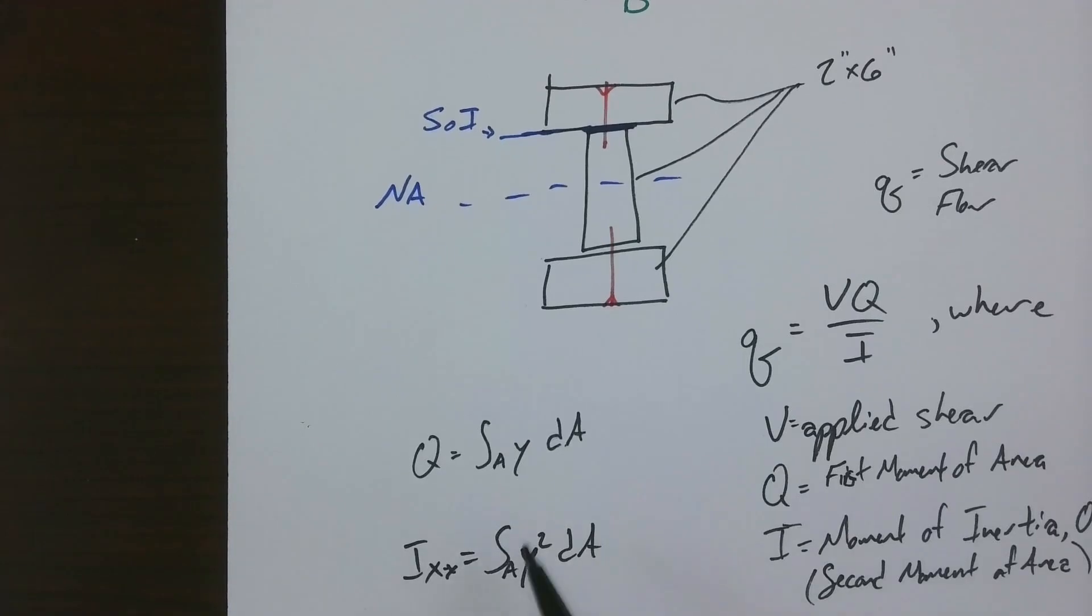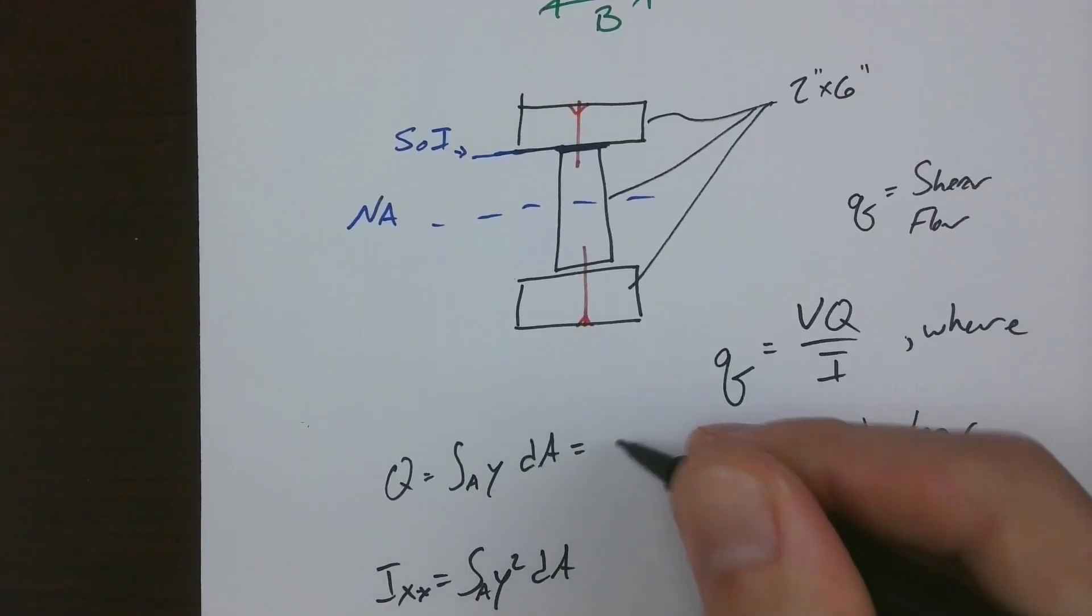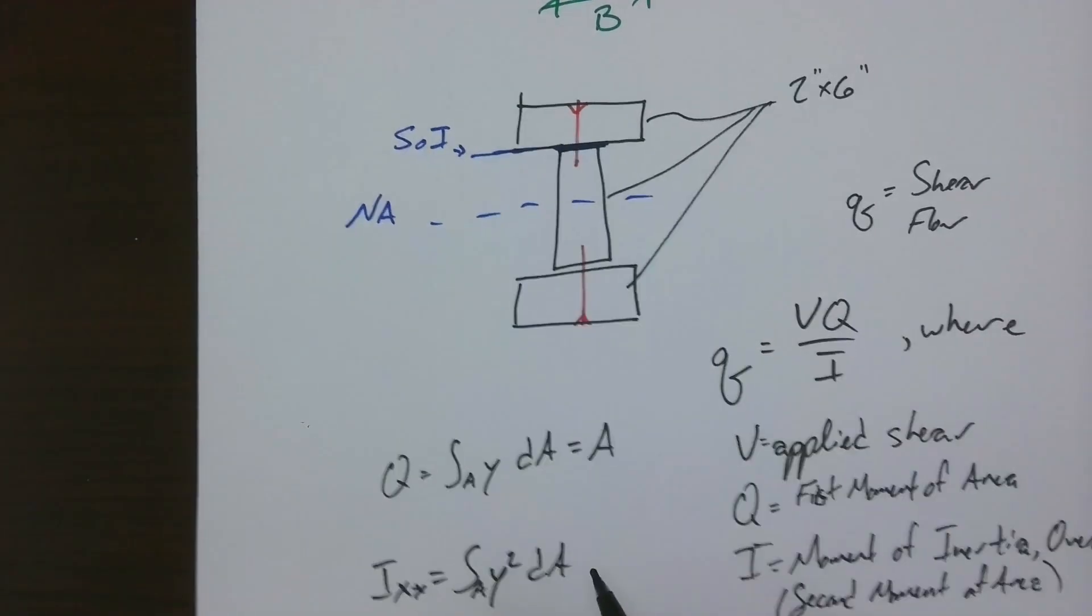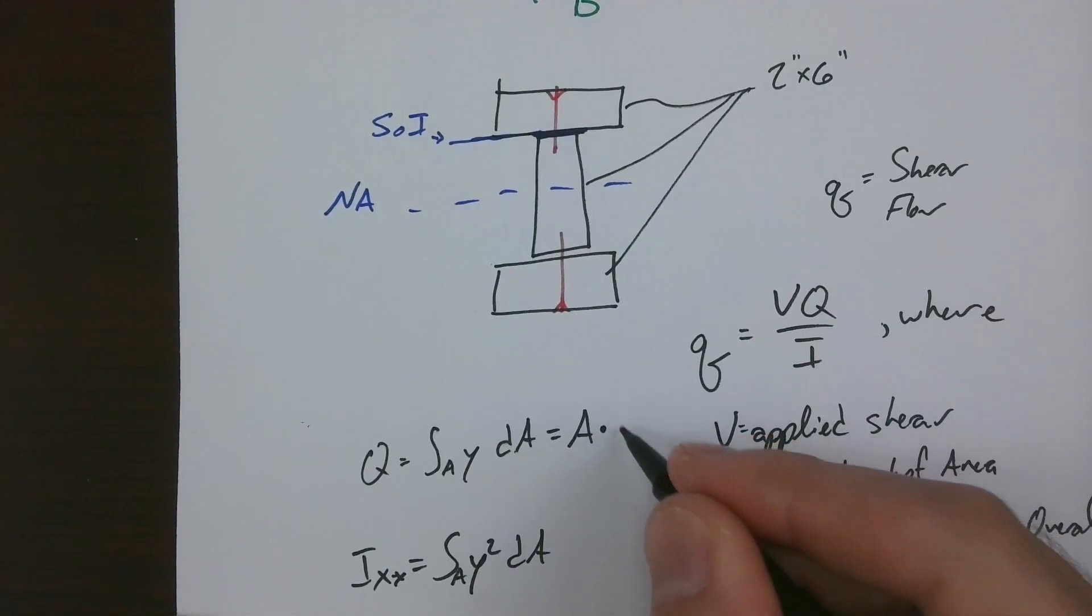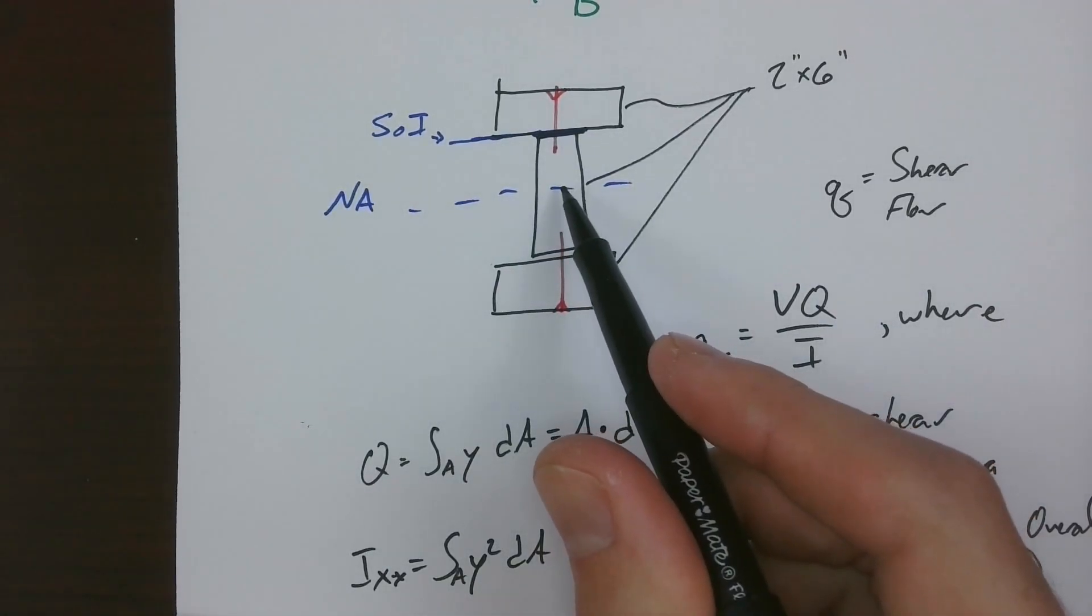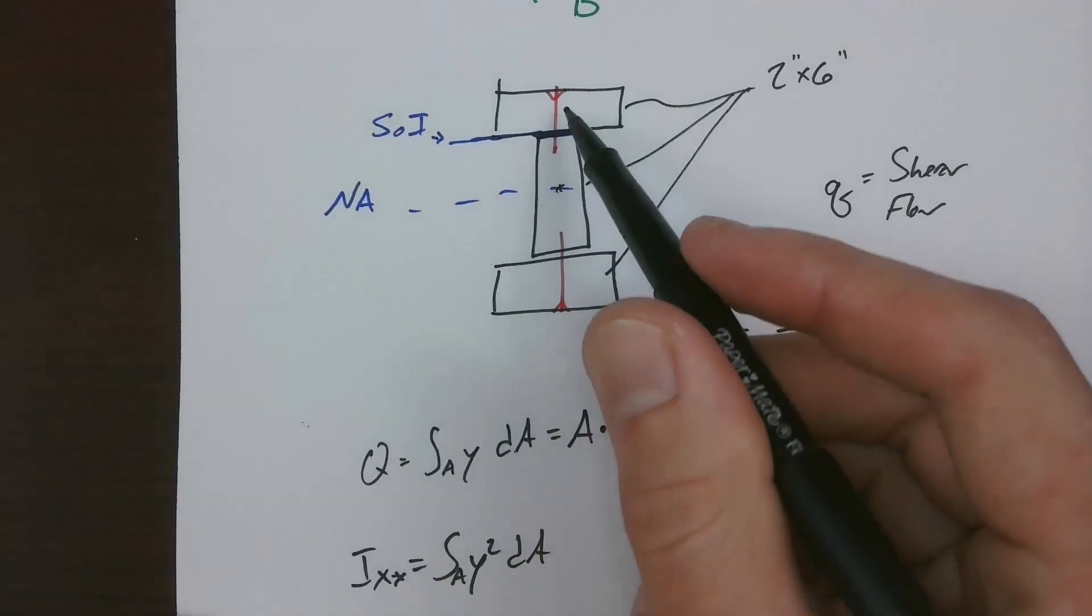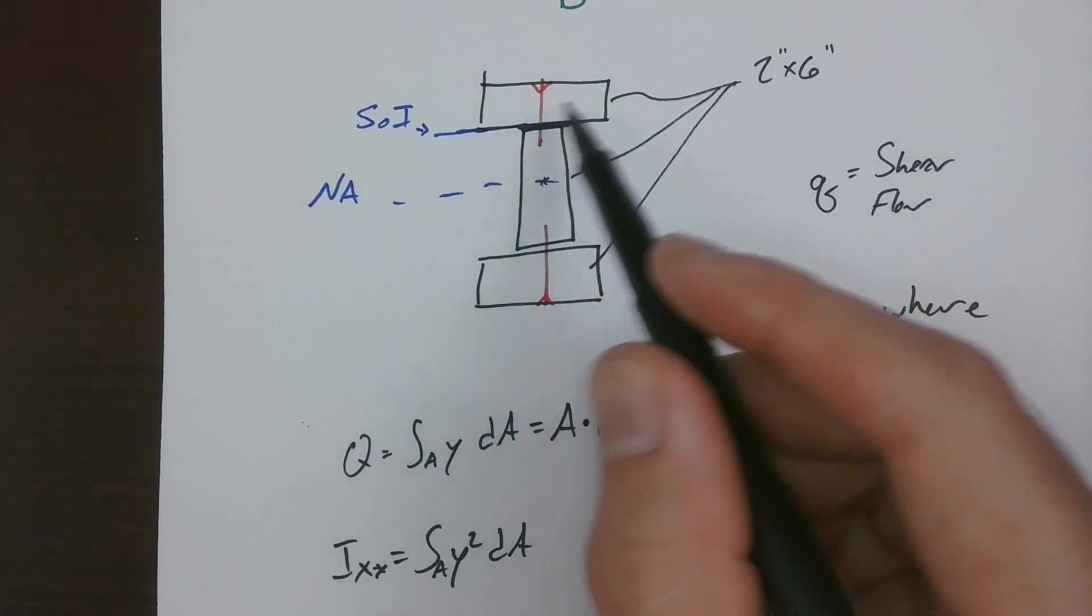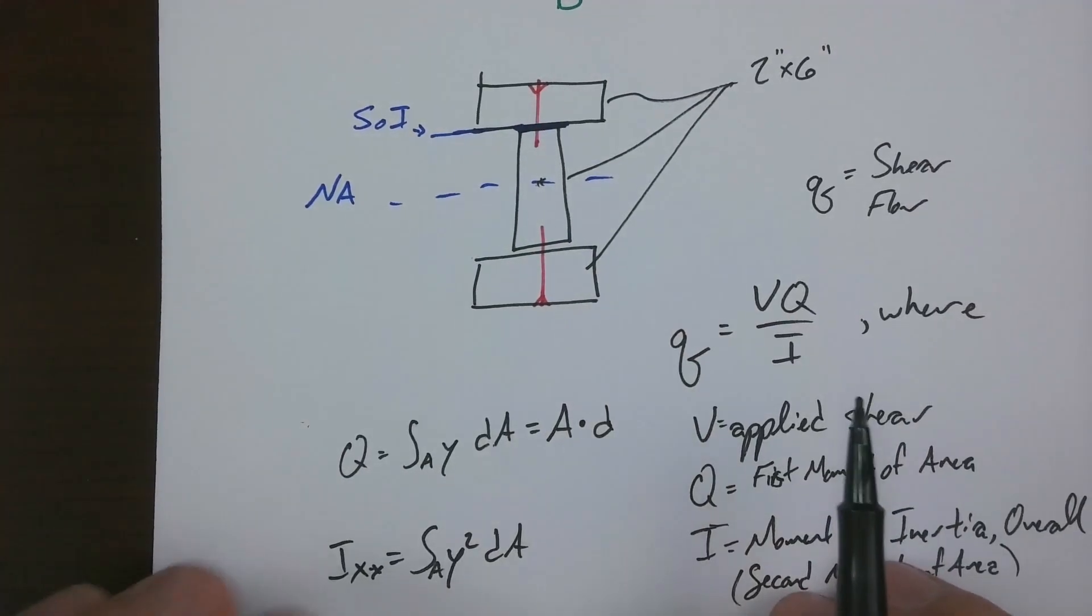All right, so simplified down, Q is equal to the area outboard of your section of interest times the distance from the centroid of your overall shape to the centroid of your outboard. So the stuff beyond your section of interest. If we turn the page here, and we've got ourselves...